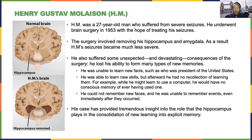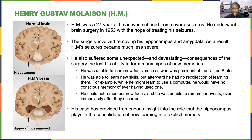Much of what we know about the hippocampus and the amygdala comes from the case of H.M., Henry Molaison, who was a 27-year-old man who suffered from severe seizures ever since having a brain injury early in his life. He underwent brain surgery in 1953 with the hope of treating his seizures, and the surgery was initially very successful — they removed his hippocampus and his amygdala, and his seizures went down.